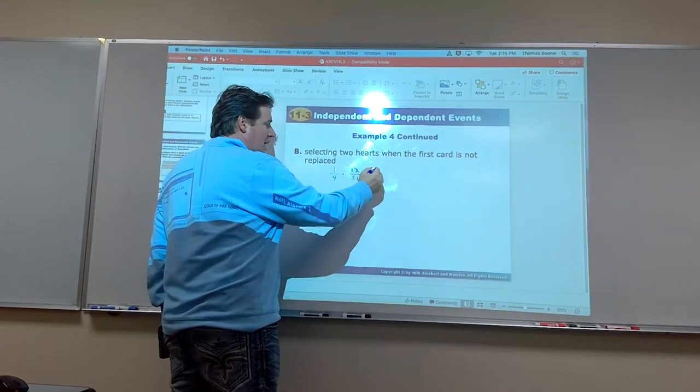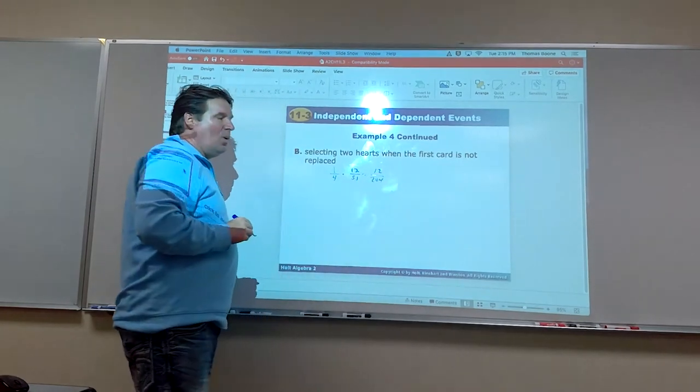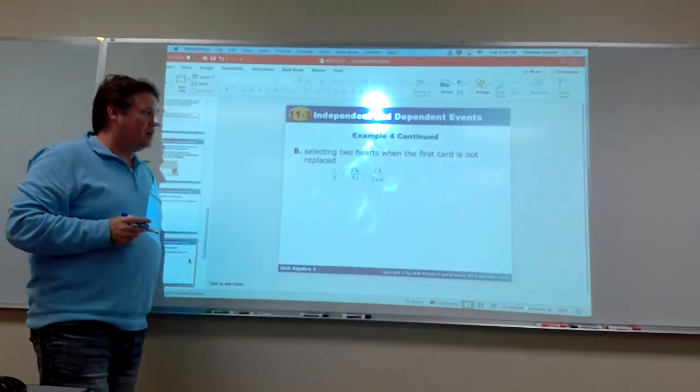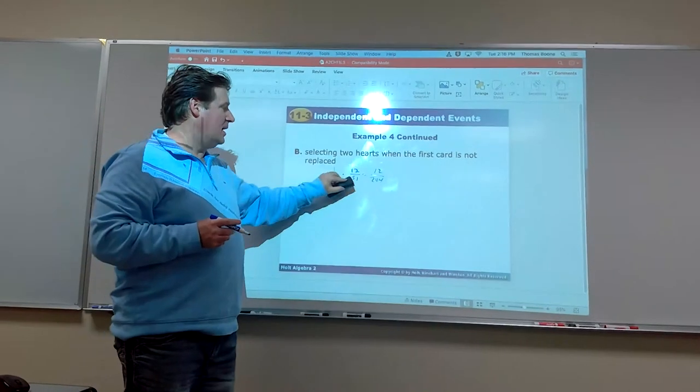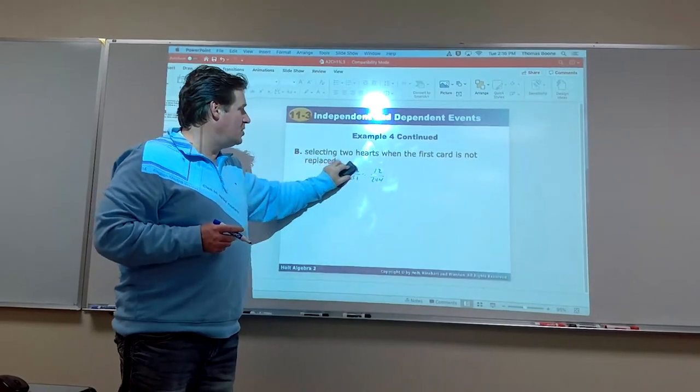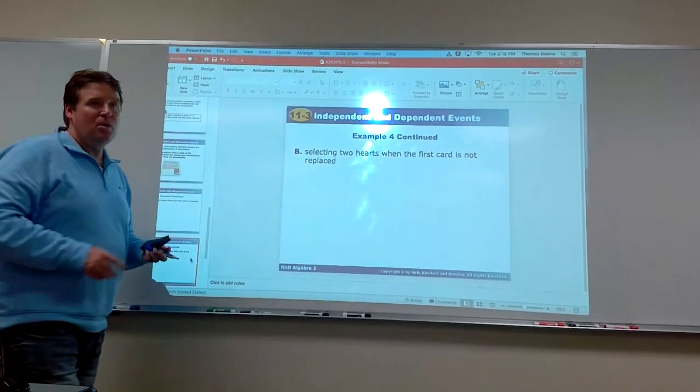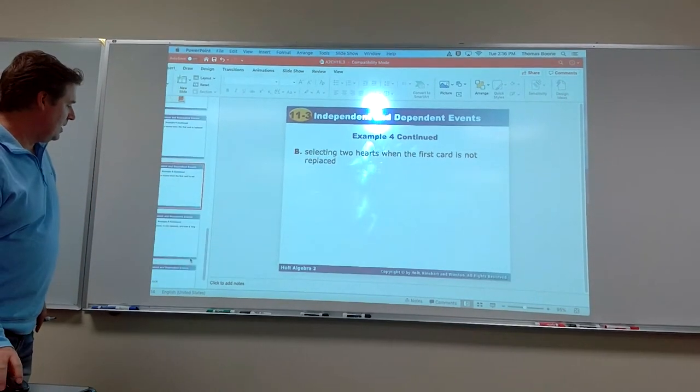So we're going to have to put those back. It's going to be 12 out of 204 is going to be our probability. Again, you have to kind of take the... We've changed the probability of that second one. Again, when we don't replace, that's where it's dependent is what we have there.